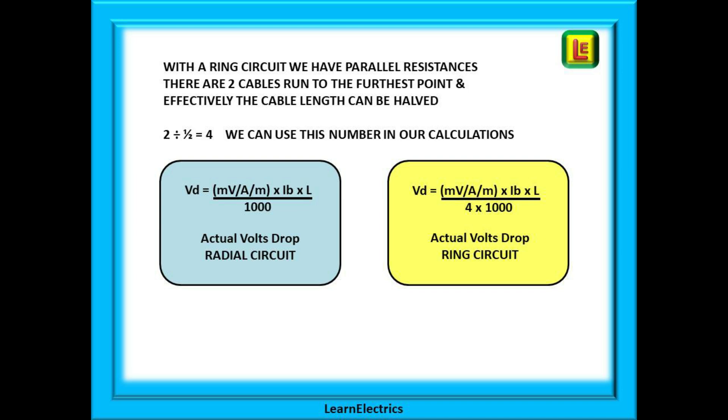We've shown on this slide the two standard formulas for voltage drop calculations. On the left in the blue box is the formula for radial circuits which you should be familiar with. On the right in the yellow box we show the formula for ring circuits, and you can see the number four that we've just worked out on the bottom row of this formula. If you remember from R1 plus R2 calculations, we also divide by four for ring circuits.